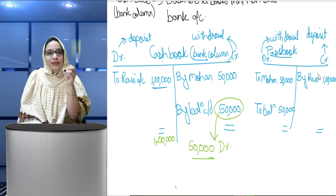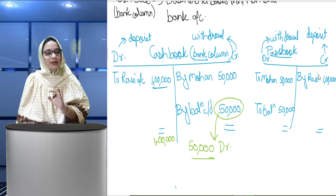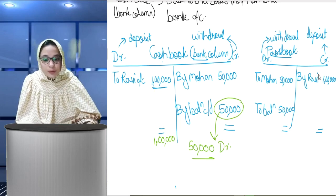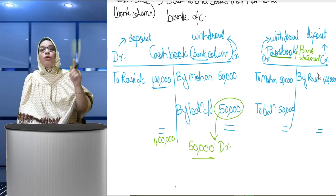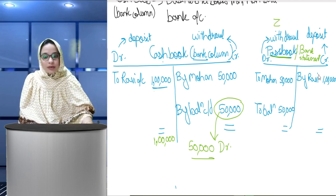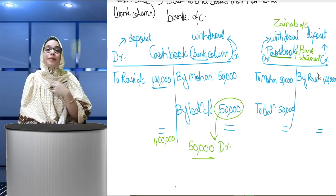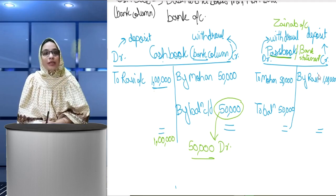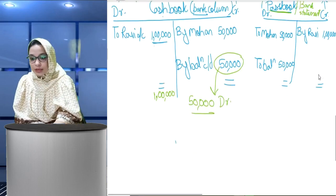This is one of the basics. Your pass book or bank statement is the bank's books, not your books. In the bank's books, your account — 'Zainab account' — is maintained. Since you have money in your bank account, your money is with them, so for them it is a liability. Is liye aapke books mein cash book debit hoti hai, toh pass book mein balance credit hota hai — because for them it's a liability.